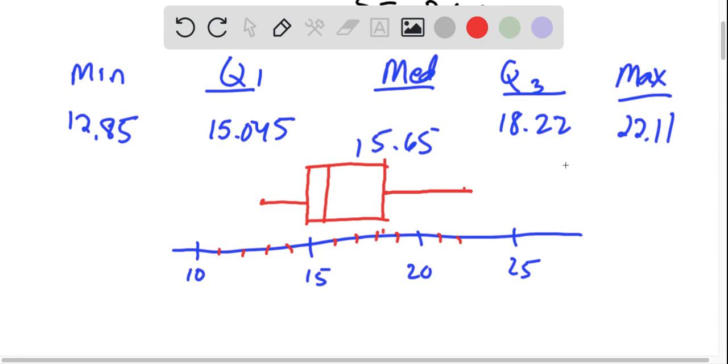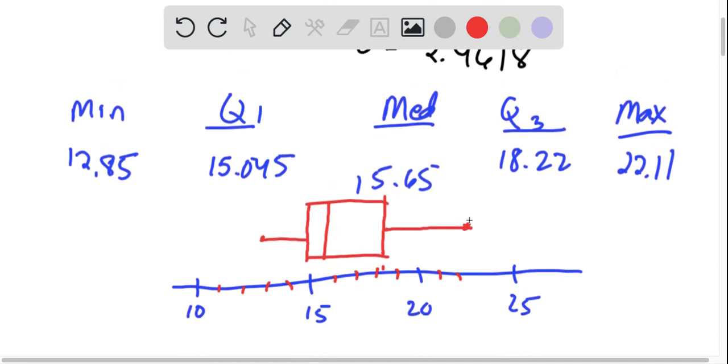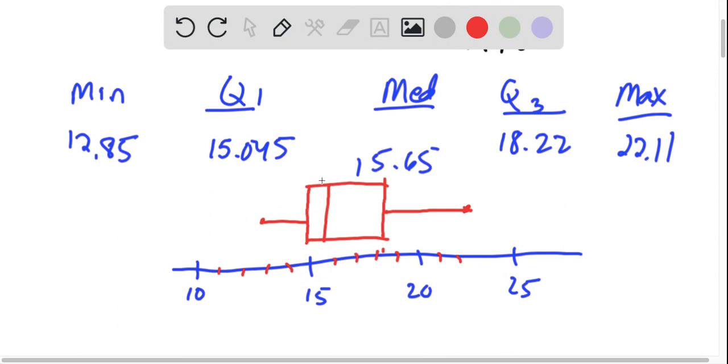So we have a little bit of skewing because, again, the mean and the median are not exactly the same. This is 25% of the data, this is 25% of the data, this is 25% of the data, and this is 25% of the data. So we have a little bit of skewing.